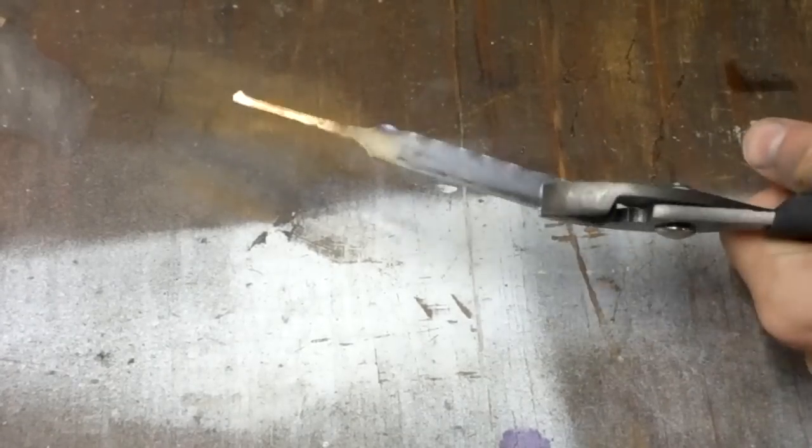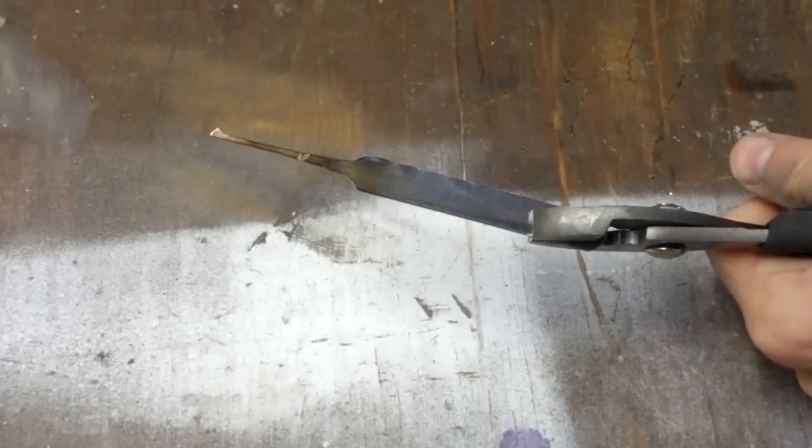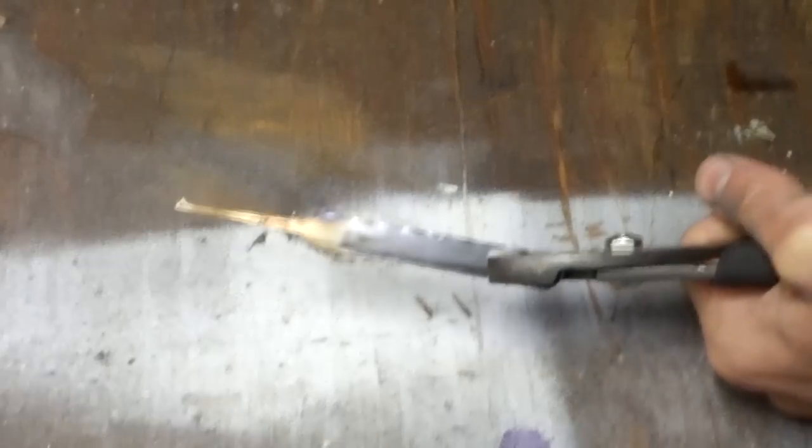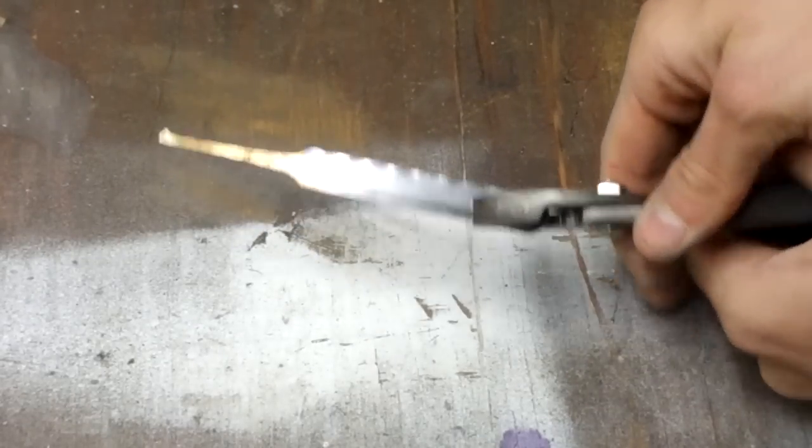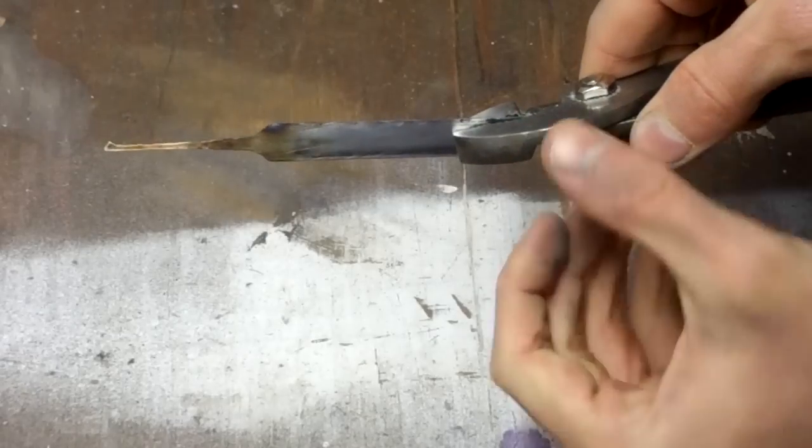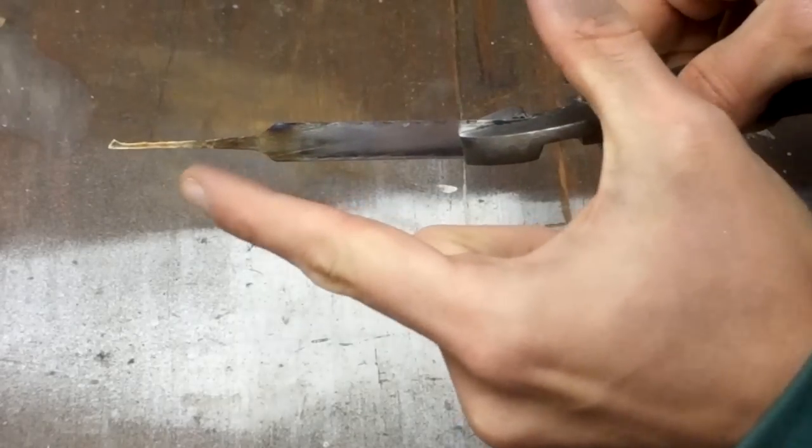I accidentally went a little too far with this. I got some dark spots and some blue spots. If this happens to you, all you need to do is harden it again. Make it red hot and quench it. Then sand down that oxidation layer and try again.